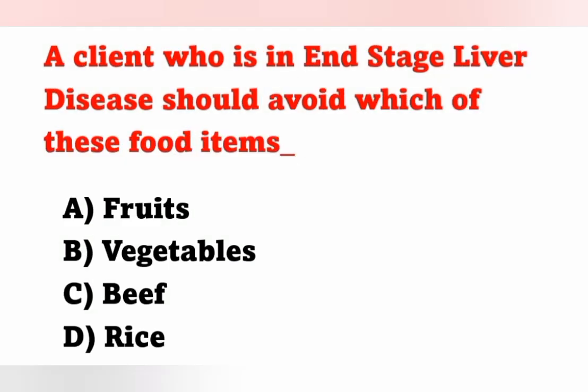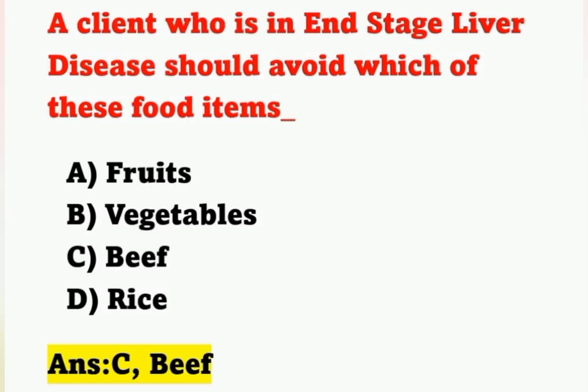Next question: A client who is in end-stage liver disease should avoid which of these food items? Option A: Fruits; Option B: Vegetables; Option C: Beef; Option D: Rice. The correct answer is Option C — beef. Protein-rich food should be avoided for a patient with end-stage liver disease.